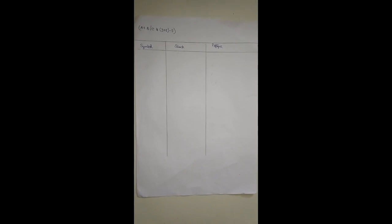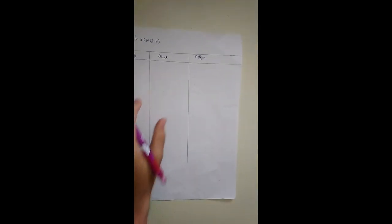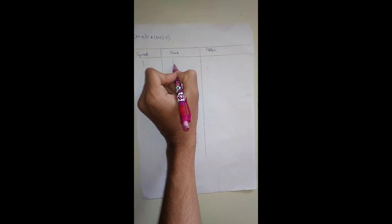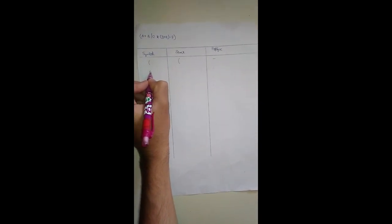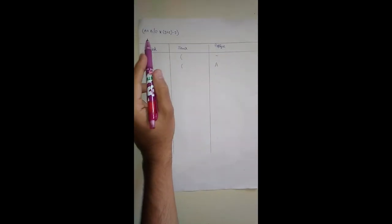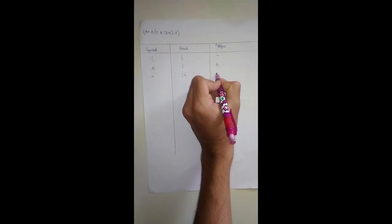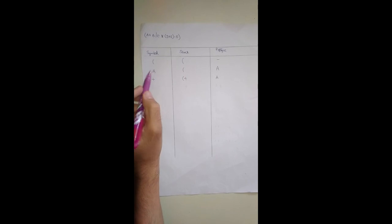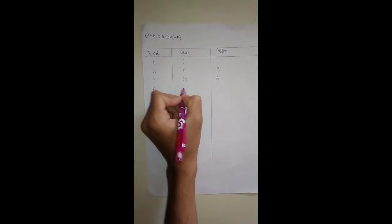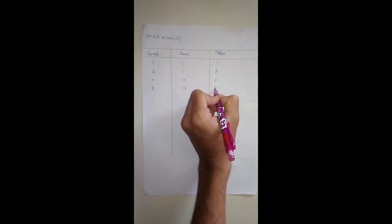Let's solve an example problem. We are converting this infix expression to postfix. The first symbol is a left parenthesis, so according to the algorithm, push it to the stack; the postfix column is empty. The next symbol is a, which is an operand, so print it to the postfix column. The next symbol is plus, which is an operator, so push it to the stack. The next symbol is b, which is an operand, so print it to the postfix column.